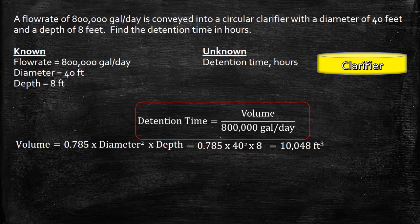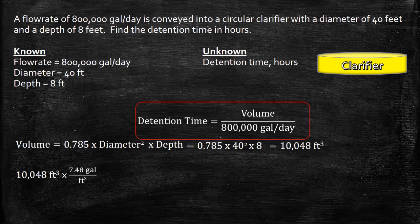So now we need to convert this 10,048 cubic feet into gallons. In order to convert it, we have to take the 10,048 cubic feet multiplied by the conversion factor 7.48 gallons divided by 1 cubic feet. The cubic feet cancel out. Using our calculator, we get 75,159 gallons.